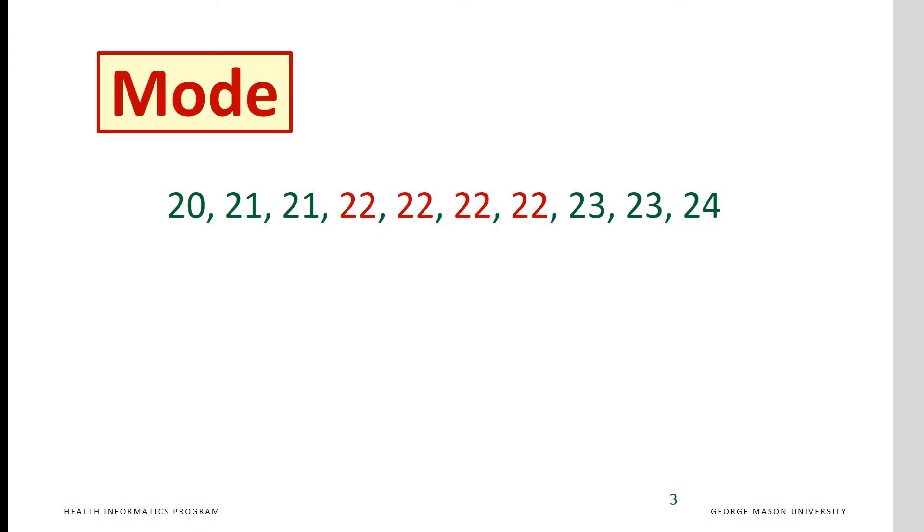The most frequent value or category in a distribution is called the mode. For example, if we calculate the mode for the following set of data, we will notice that 22 occurs the most frequently.